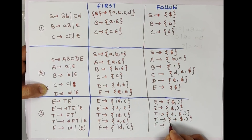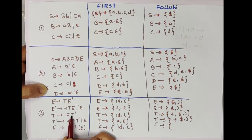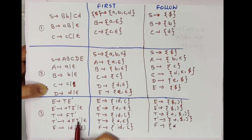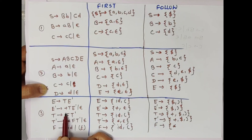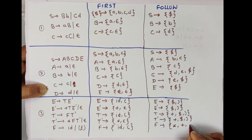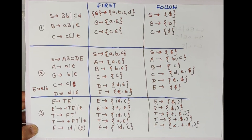Next, FOLLOW(F): F is followed by T' in both rules. FIRST(T') = {*}. So we add *. Since T' can give ε, F can become last symbol, so we add FOLLOW(T). FOLLOW(F) = {*, +, $, )}. In this way we can find out the FIRST and FOLLOW of this arithmetic expression grammar.